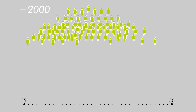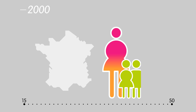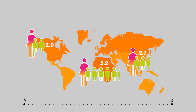They obtain a total of 190 children. By dividing that figure by 100, that gives us a total fertility for the year 2000 of 1.9 children per French woman. This indicator, which is also known as the total fertility rate, makes it possible to compare the fertilities of various populations in the world. It also makes it possible to identify whether fertility increases or decreases from one year to the next in the same population.